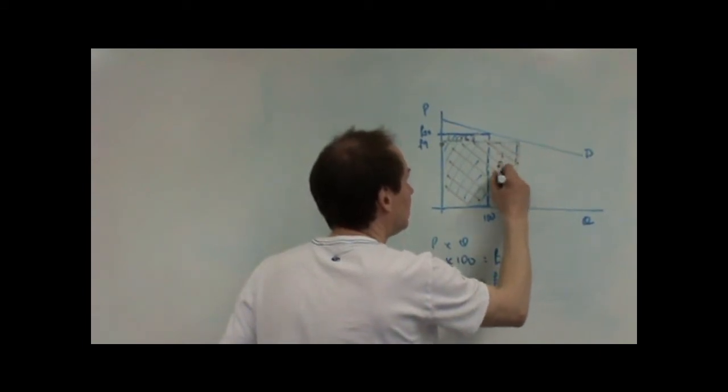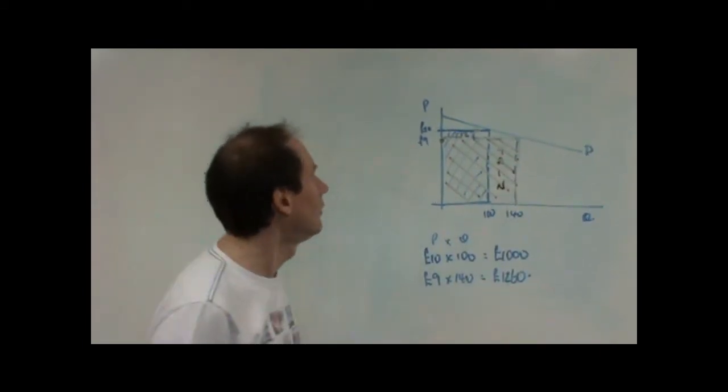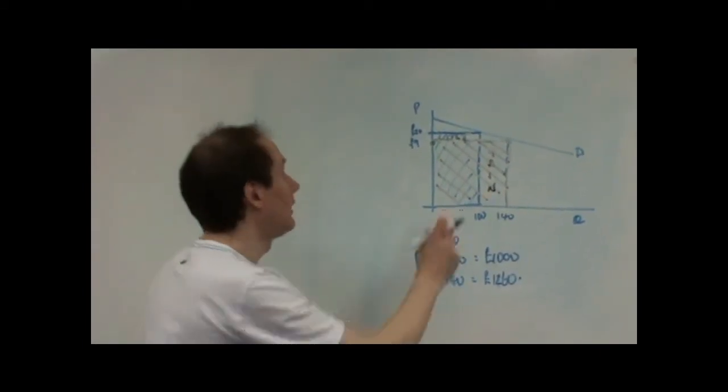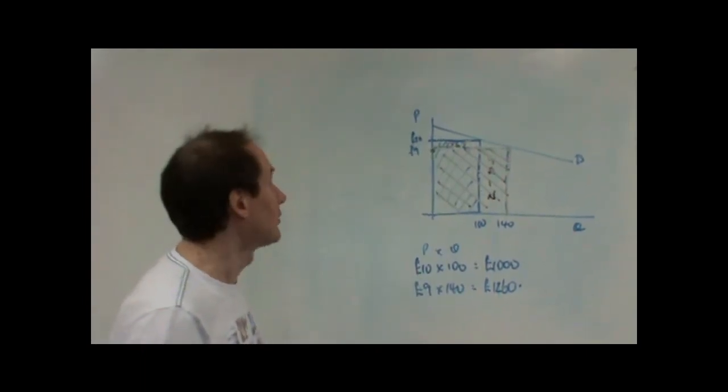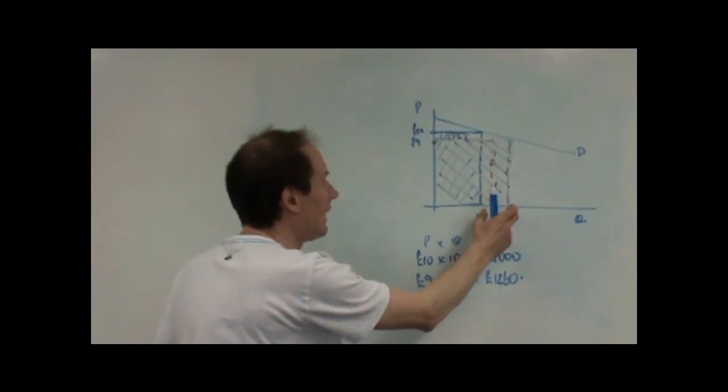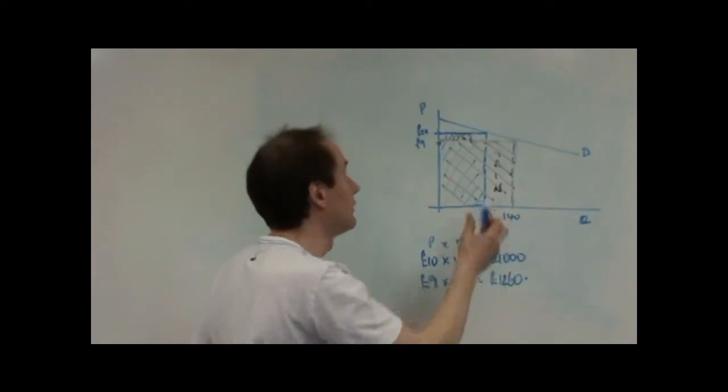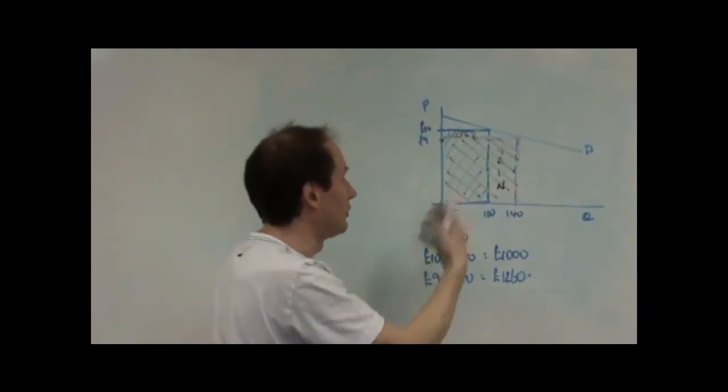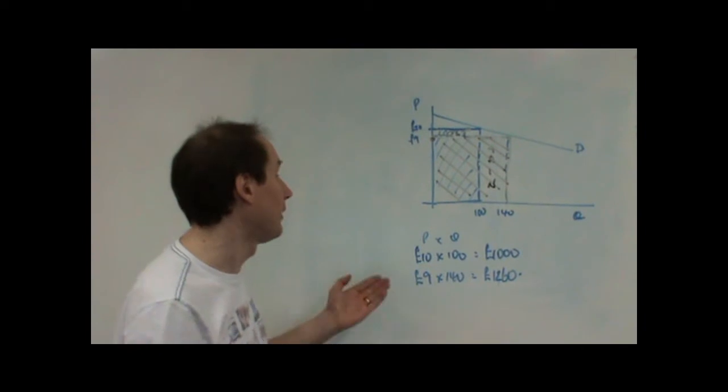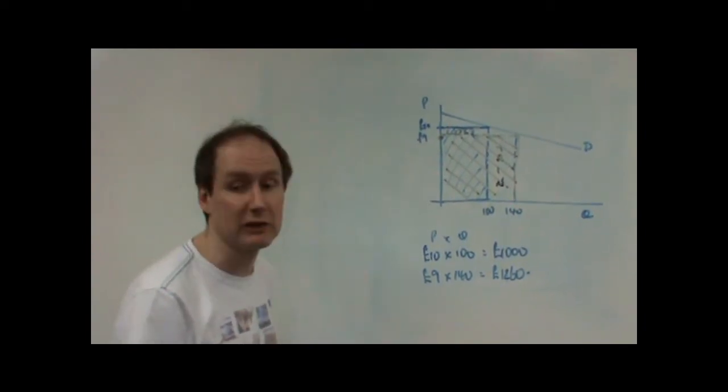But it has gained 40 units at £9 each. So, effectively, it's gained 40 times 9, which is £360. It's lost 1 times 100, which is £100. And that's why revenue's gone up now by £260.